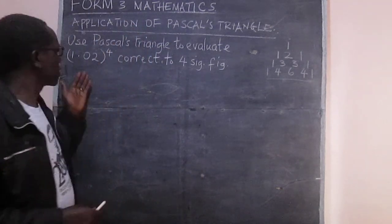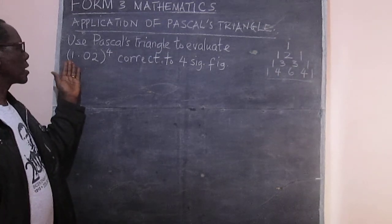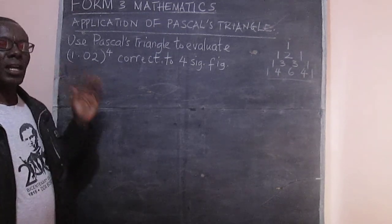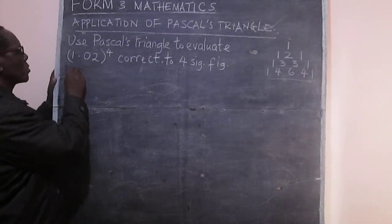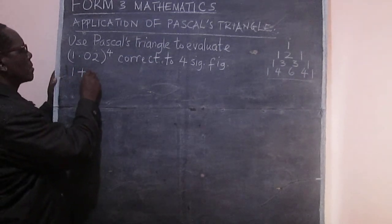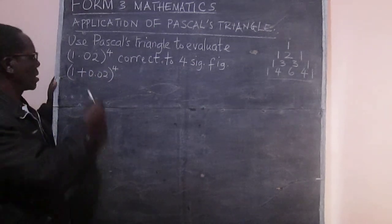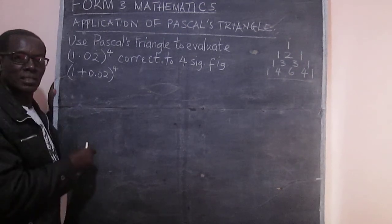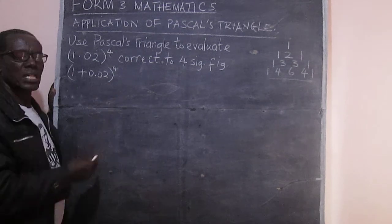Now when we look at the given question, we have 1.02. I think it's good to note that we can split this to 1 + 0.02, power 4. And therefore, our a is 1, and our b in the binomial expression is 0.02.